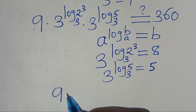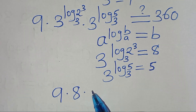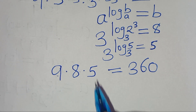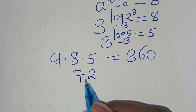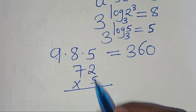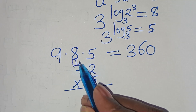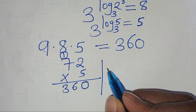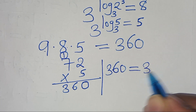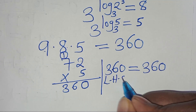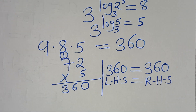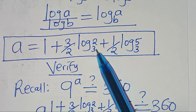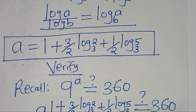So substituting, now we have 9 times 8 times 5. This is supposed to give us 360. So 9 times 8 is equal to 72, then times 5: 5 times 2 is 10, carry 1, then 7 times 5 plus 1 is 36, giving us 360. So 360 equals 360. The left-hand side equals the right-hand side, and this confirms that the value of a, which is 1 plus 3 over 2 times log base 3 of 2 plus one half times log base 3 of 5, satisfies the equation.